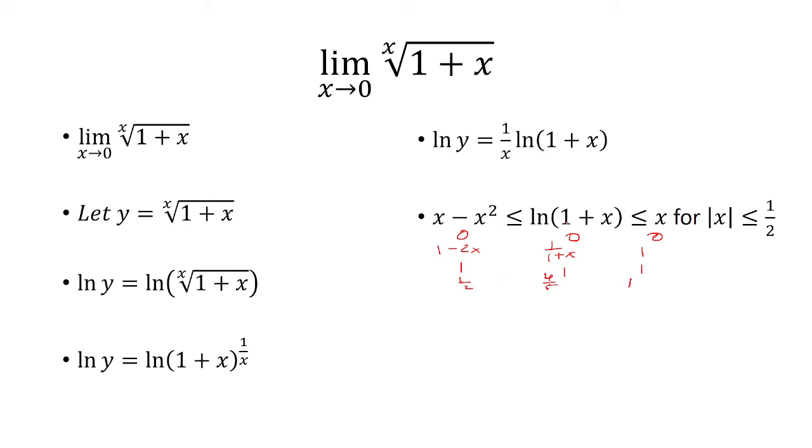So the function, think of it like they start off at the same point, but x is growing faster than ln of 1 plus x and x minus x squared. And then we're considering only where the absolute value of x is less than or equal to 1/2. So that's a way to understand this inequality.